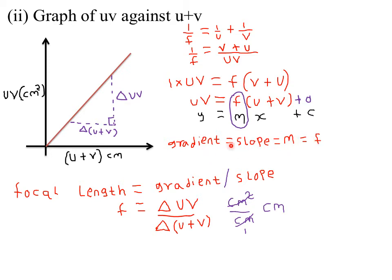So whenever you have a graph of uv against u + v, the gradient will always equal the focal length. Remember, they can twist the question — if they ask you to draw a graph of u + v against uv instead, then the gradient will be equal to the reciprocal of the focal length. Taking centimeters squared divided by centimeters gives the focal length in centimeters.